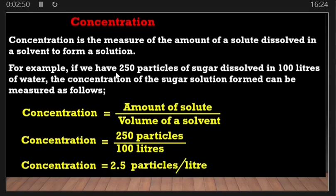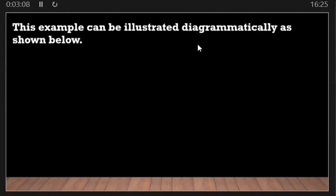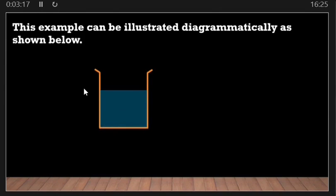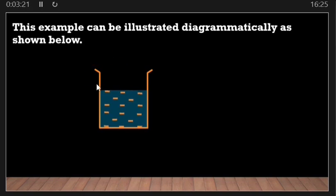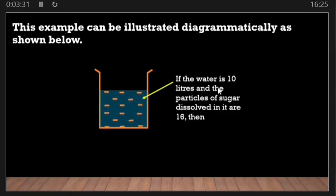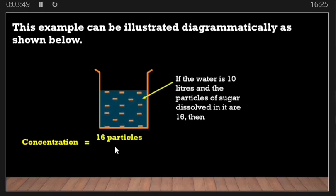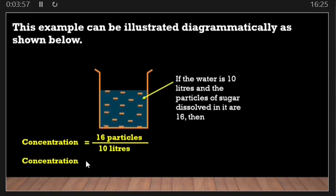This example can also be illustrated diagrammatically. If we have a beaker with water in it and we put sugar particles in, let's assume we have 16 particles and the water is 10 liters. Then concentration is equal to 16 particles divided by 10 liters, which gives us 1.6 particles per liter.